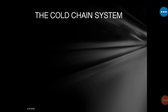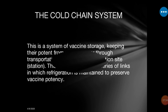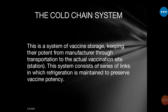Next we discuss the cold chain system. The cold chain system is a system that ensures that vaccine potency has been maintained — we must make sure that those vaccines are stored and maintained under a standard temperature.